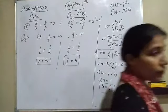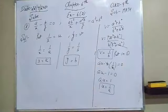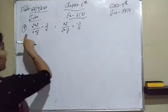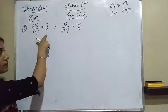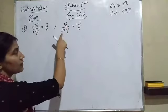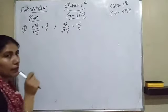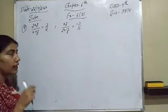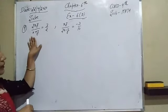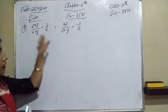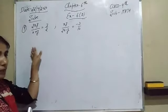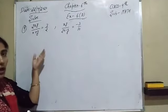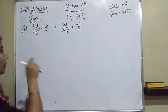Now we come to the ninth question of this worksheet. The equations are: 2xy/(x+y) equals 3/2, and xy/(2x−y) equals −3/10. We have to solve and find the values of x and y. Notice the denominators are (x+y) and (2x−y) — they are not the same.